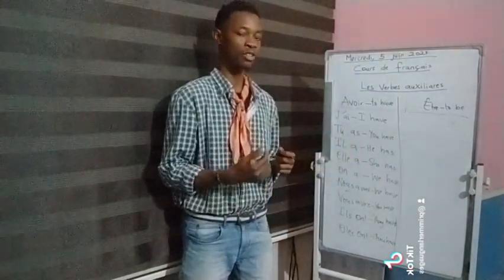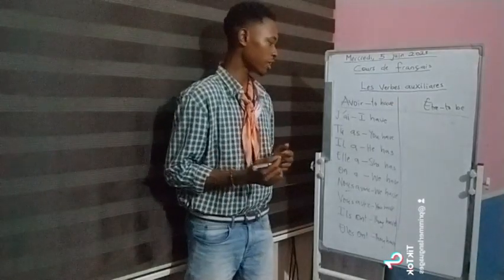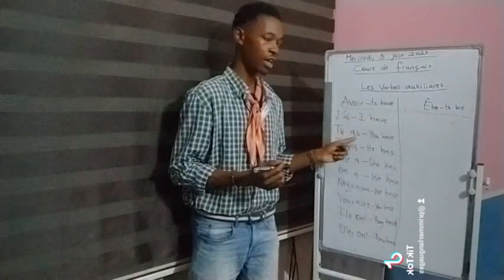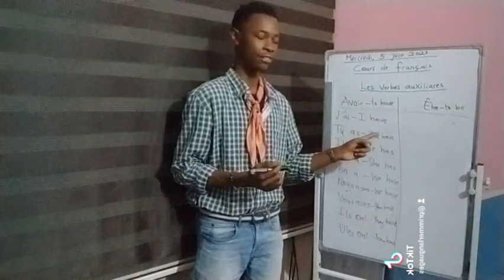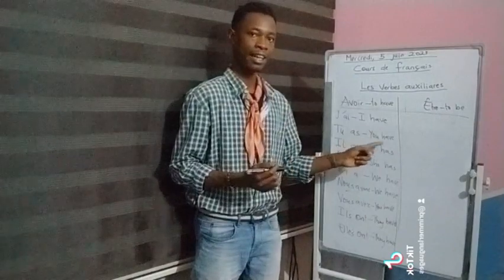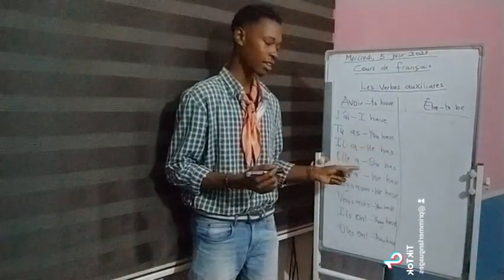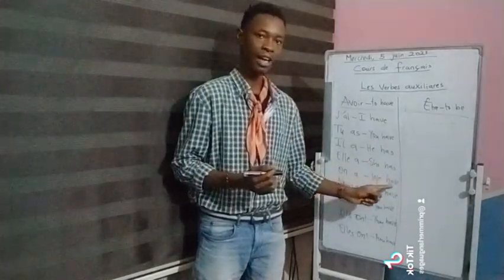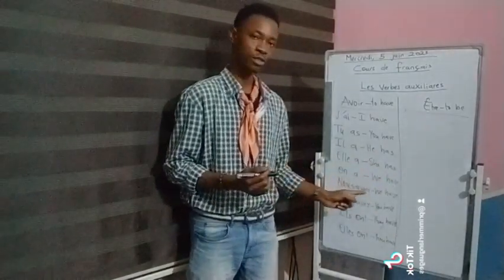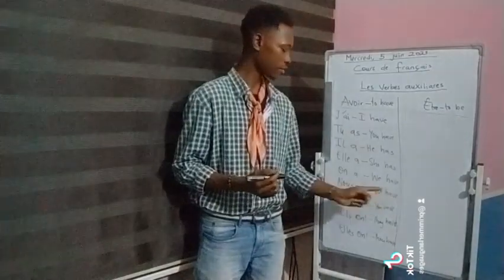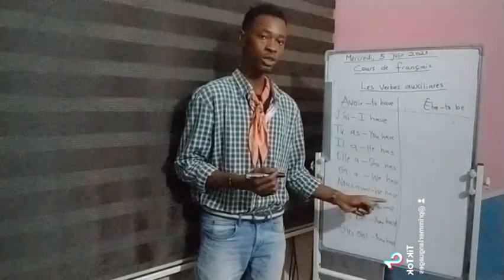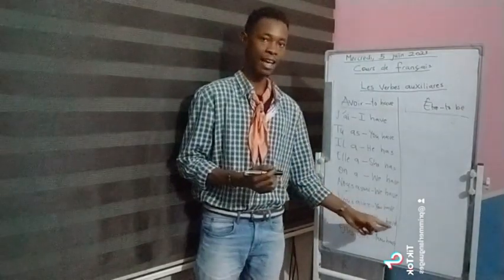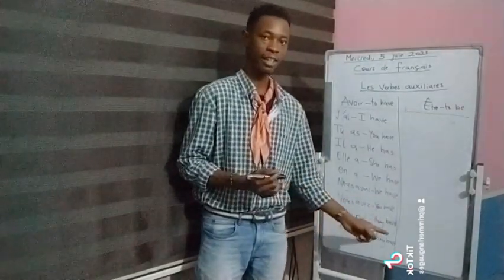Let me do a recap on how to pronounce this. J'ai — I have. Tu as — you have. Il a — he has. Elle a — she has. On a — we have. Nous avons — we have. Vous avez — you have. Ils ont — they have. Elles ont — they have.